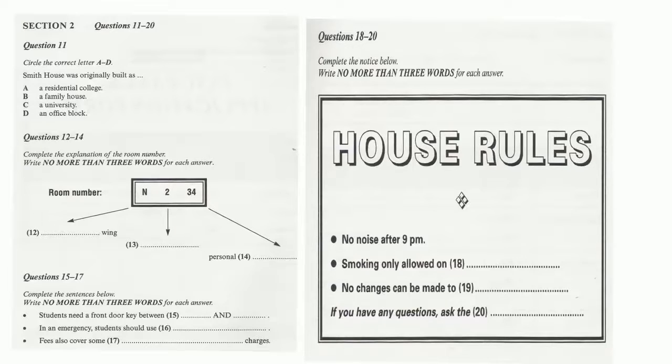Before you hear the rest of the talk, you have some time to look at questions 15 to 20. Now listen carefully, and answer questions 15 to 20. You'll also notice, when you receive your orientation pack shortly, that there are two keys. One is the key to your room, and only you have that key, and the other is a key to the front door, which you've just come through here from the street. This door is closed and locked at 8pm every night, and opened again at 7am. You'll need your key if you're coming back to the college between those times.